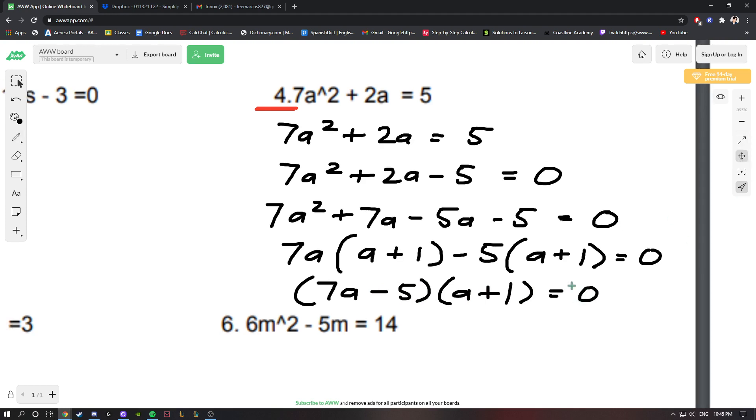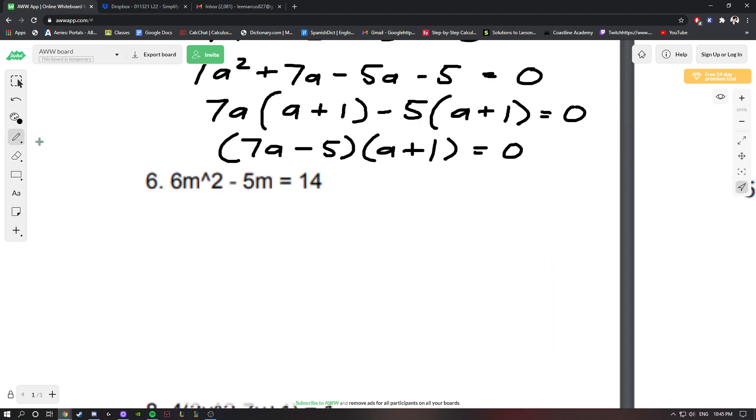We're not completely done yet. We want to set each factor equal to 0: 7a - 5 = 0 and a + 1 = 0. For 7a - 5, we move the 5 over and divide both sides by 7, so we have a = 5/7. To solve this one, we just subtract 1 on both sides and get a = -1.